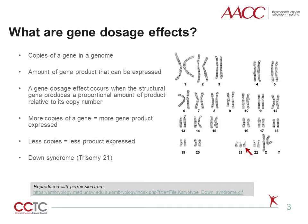What are gene dosage effects? The gene dosage effect occurs when the structural gene produces a proportional amount of product to its copy number. There is an appropriate dose for every gene, so too much or too little expression of a given gene or set of genes can result in cellular dysfunction and disease. The more copies of a gene, the more gene product is expressed, and vice versa. For example, in Down syndrome, gene expression on chromosome 21 has increased by 50% because the number of copies of chromosome 21 has increased from 2 to 3 — trisomy 21.